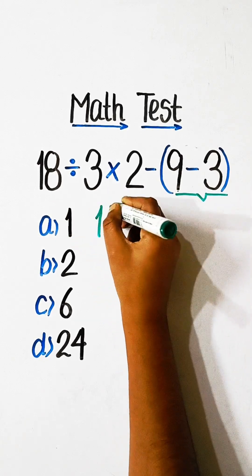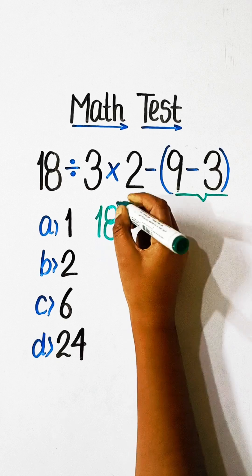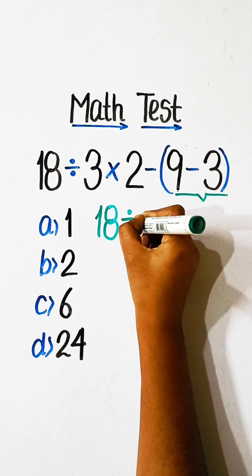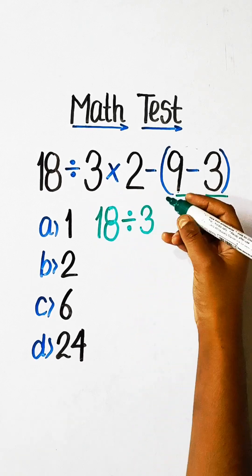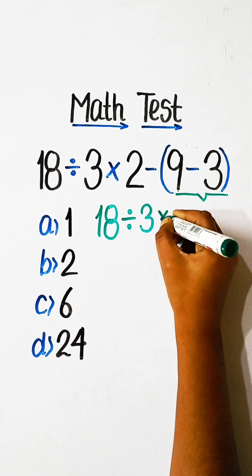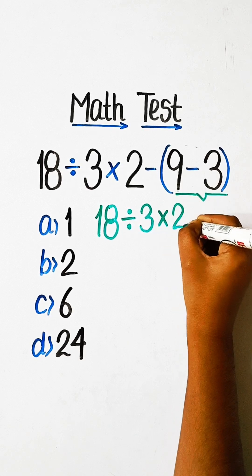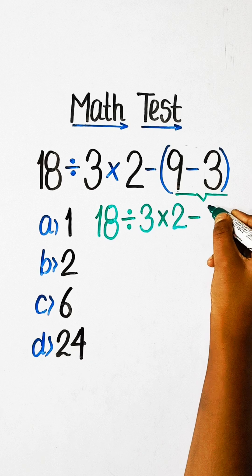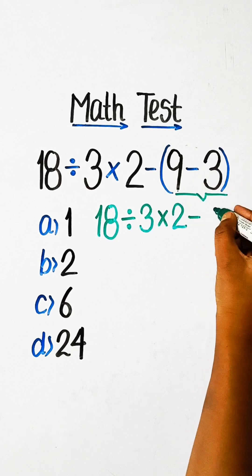So, we can write here 18 divided by 3 multiplied by 2 minus 9 minus 3 is 6.